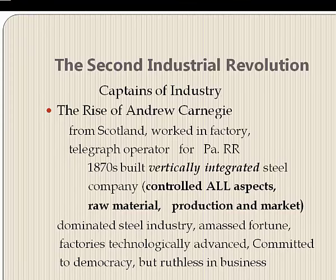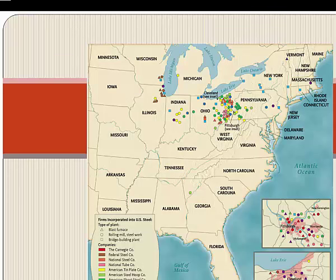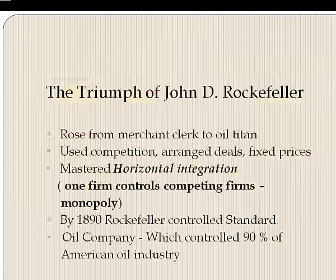Although Carnegie's upbringing had instilled in him a commitment to democracy, social equality, and charity, he ran his factories ruthlessly. His operations were concentrated in Indiana, Ohio, Pennsylvania, and West Virginia — he owned and controlled the coal refining and the railroads throughout that area. It was vertically integrated.